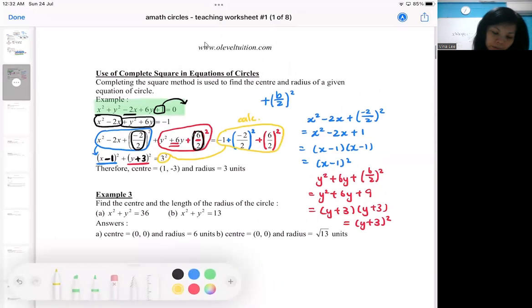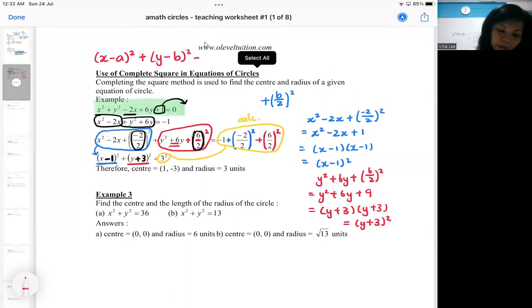And then you compare it with the general formats. So remember the format is, this is a subtraction. So can you see that this part? So look carefully, this is your A, this is your B. So A is equal to 1, B is equal to minus 3. Don't forget this is a minus.